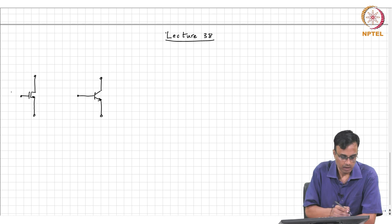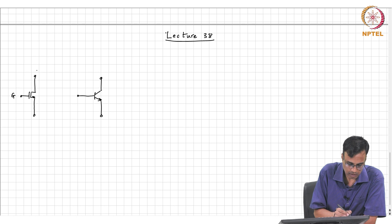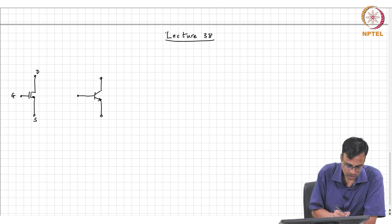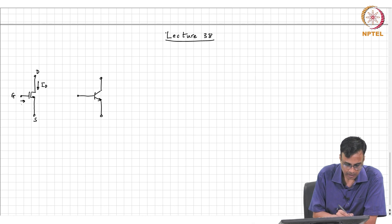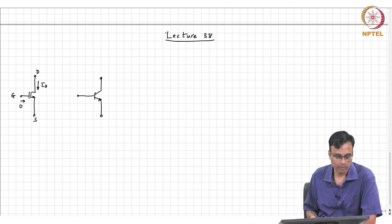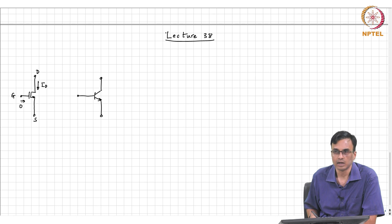In the MOSFET, this is the gate, this is the drain, and this is the source. The drain current ID, the gate current IG was 0, and therefore the drain current and the source current are equal.